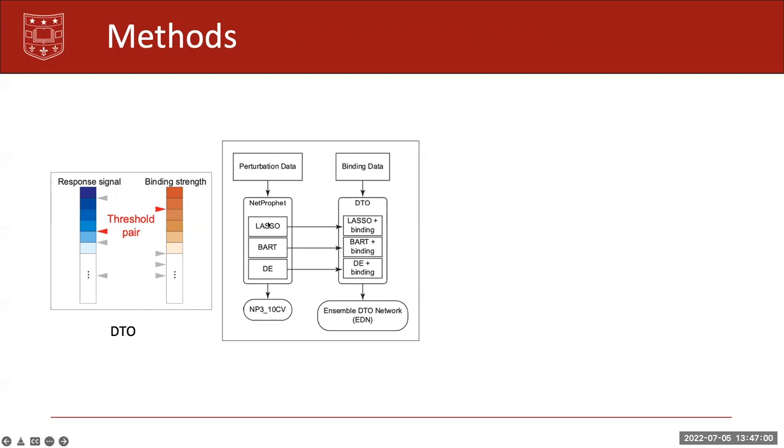Now what we do instead is we take the individual outputs from NetProphet and feed it into DTO alongside the binding data. Then we get three networks out of DTO, and we combine those three networks to generate the Ensemble DTO Network EDN.